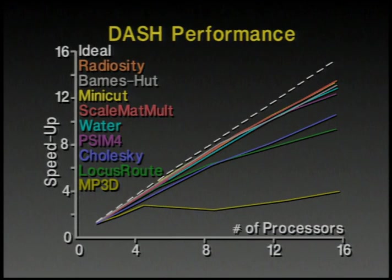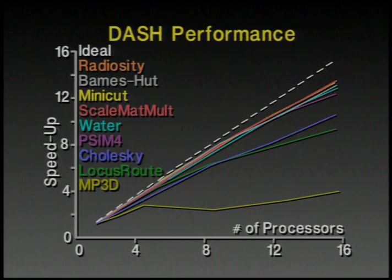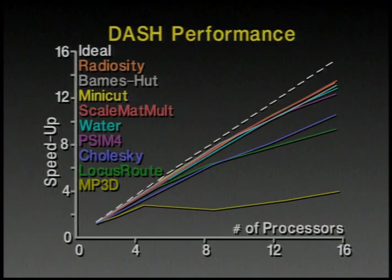On the 16-processor prototype for DASH, performance numbers cover a wide range of applications: radiosity calculations for graphics, scientific programs for galaxy evolution, fluid flow, the classic matrix multiply, and engineering programs like placement and routing by simulated annealing. The speedup for a wide range of these problems is quite good. I'd like to show why the performance on one program is particularly good, and why one — MP3D at the bottom of the chart — has performance that is not so good.